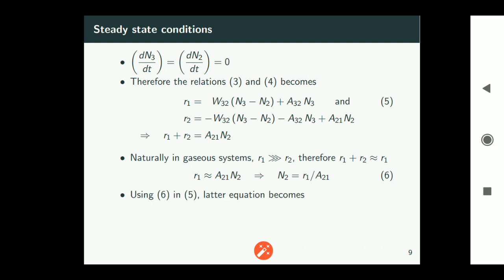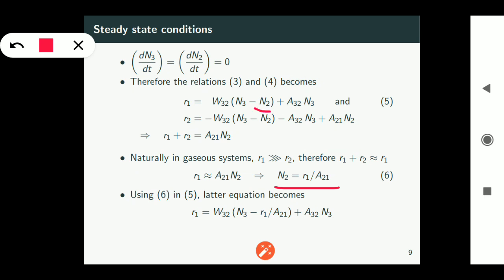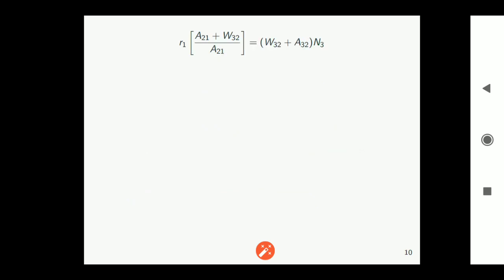Using equation 6 in 5, the equation 5 becomes - that means you are just substituting this value here and then that will become like that: r1 equals w32*(n3 minus r1/a21) plus a32*n3.